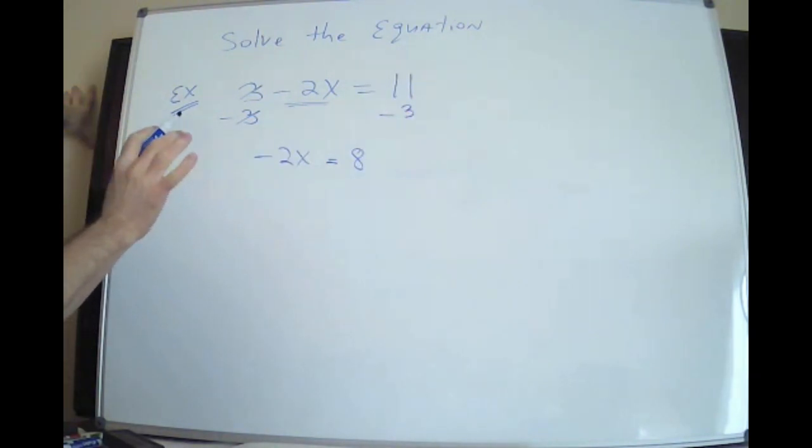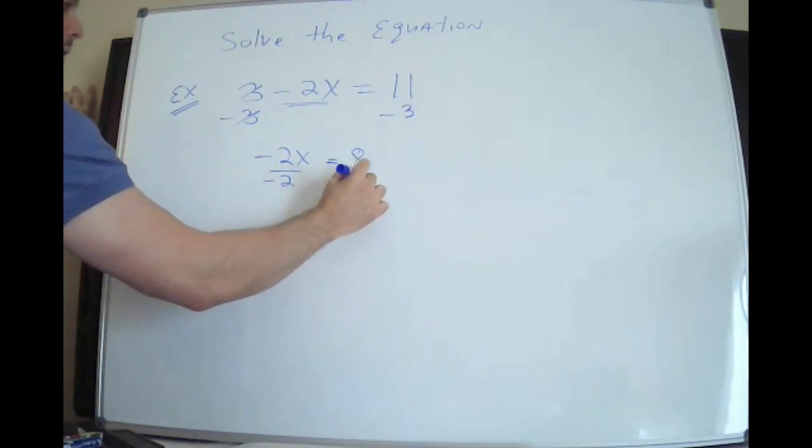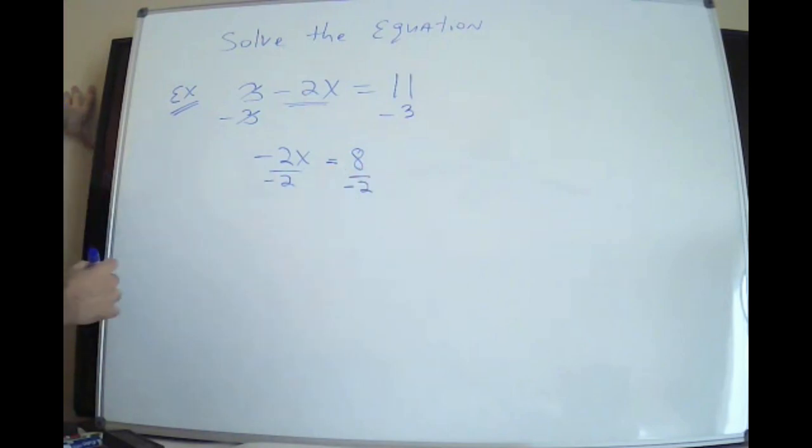Now, remember, all about opposites. Solving equations, you're always doing opposites. The opposite of multiplying by negative 2. You're multiplying by negative 2. So you have to divide by the same number that's in front of the x, which is negative 2. But whatever you do to the left, you have to do to the right. So I divide both sides by negative 2.